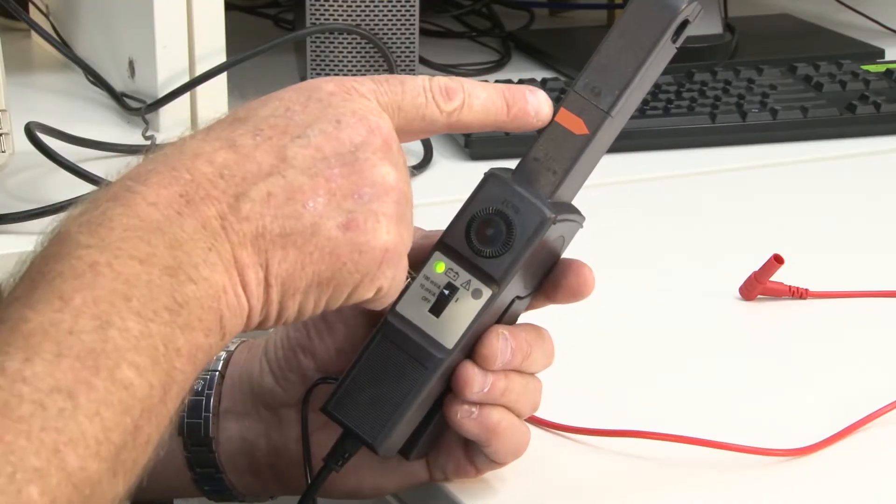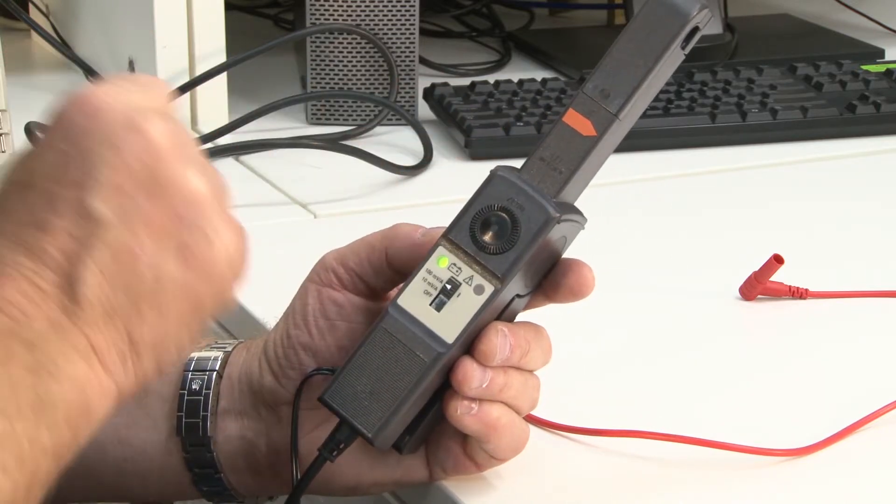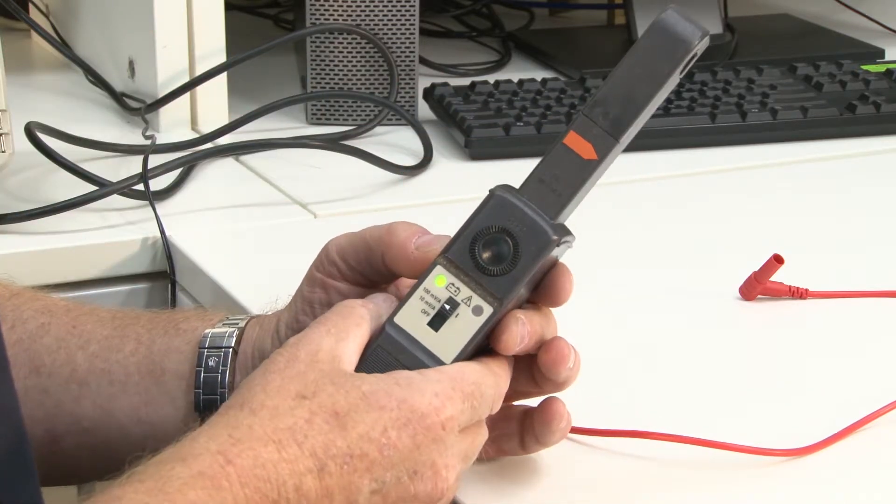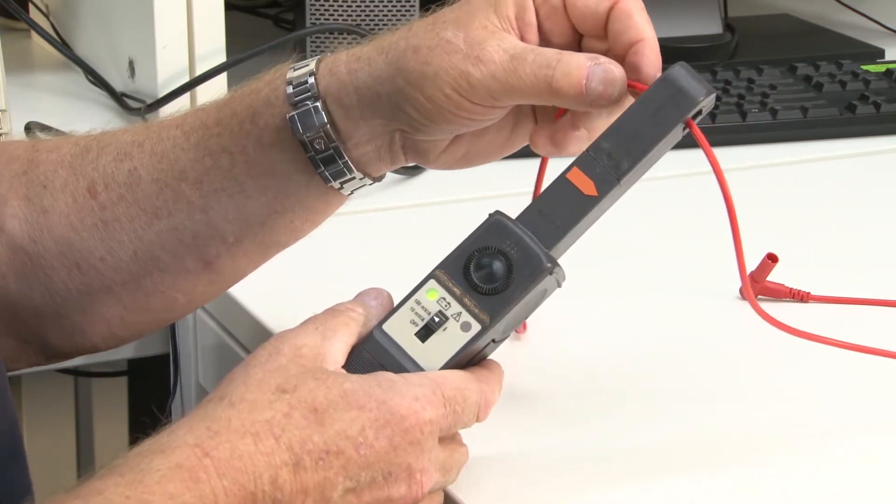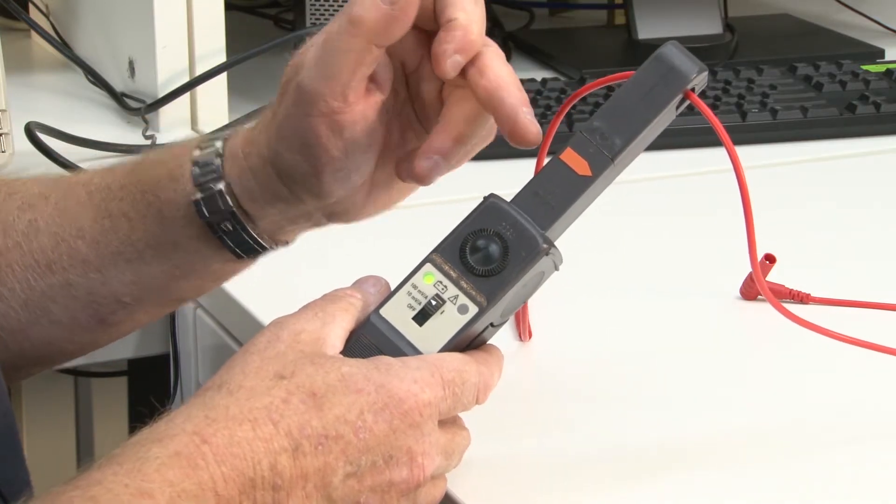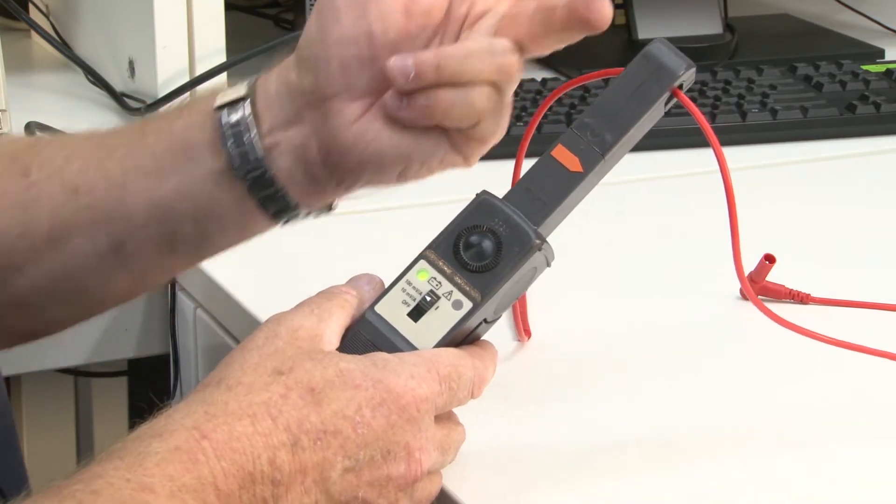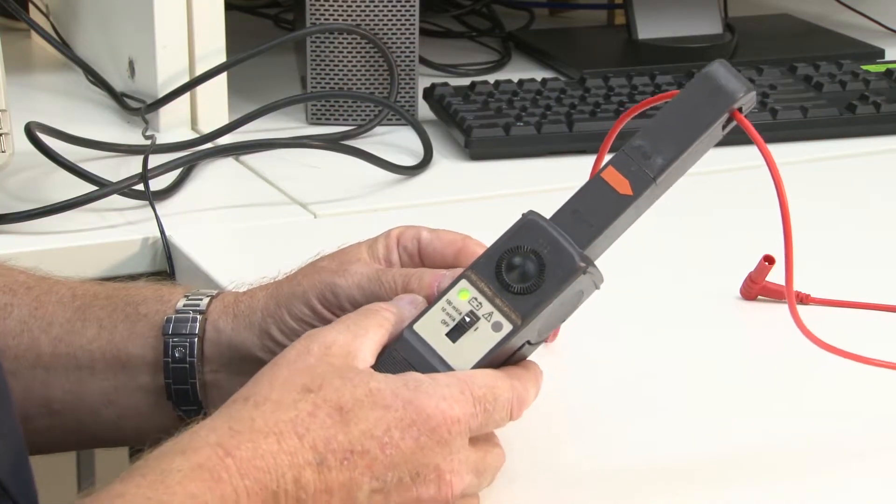The first thing you'll notice here is that we have a little arrow here. Now this is a clamp-on device. So if we have a cable such as this, we simply clamp it around the cable like so. But what we need to make sure is that this probe is connected with that arrow in the same direction of the actual current flow. So it's important to actually do that.